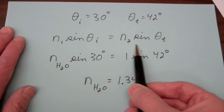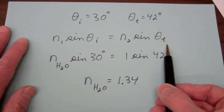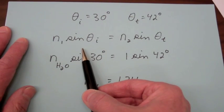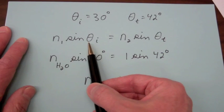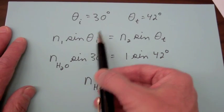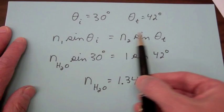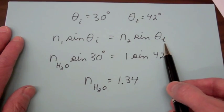Going back to our equation that describes the refraction, the angle that the light beam in the water makes with the water-air interface, that incident angle was thirty degrees and we measured a transmitted angle of forty-two degrees.